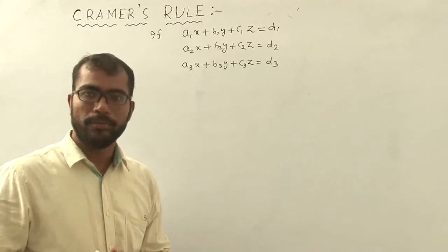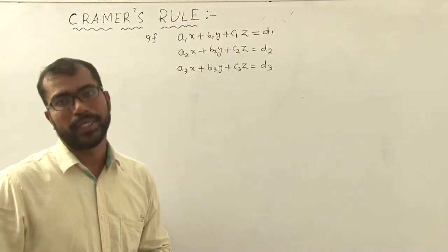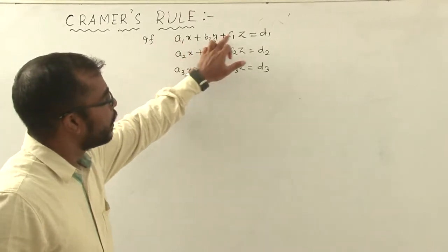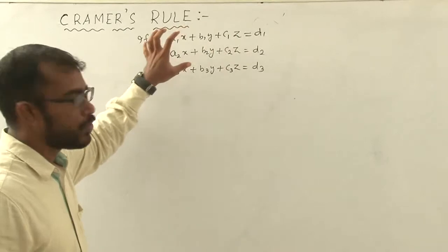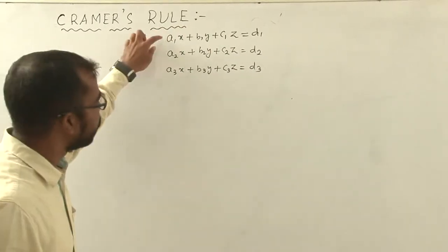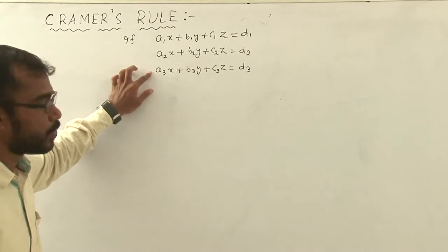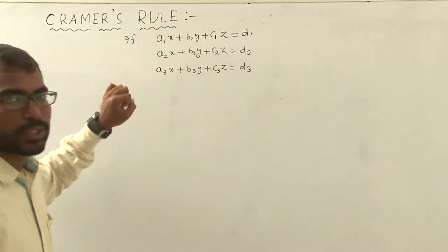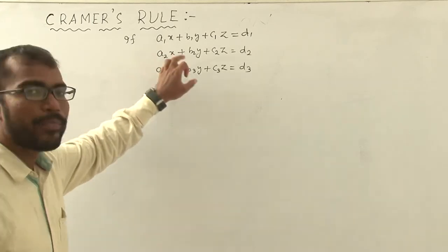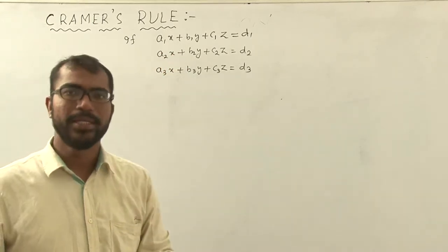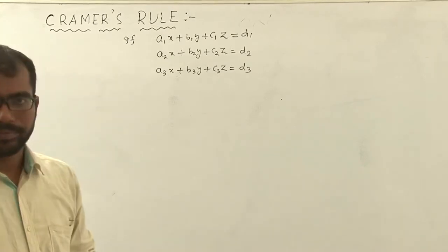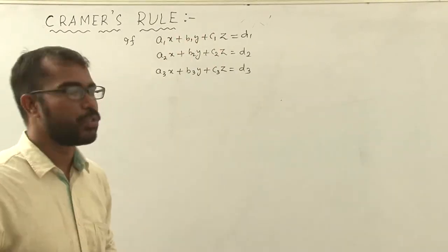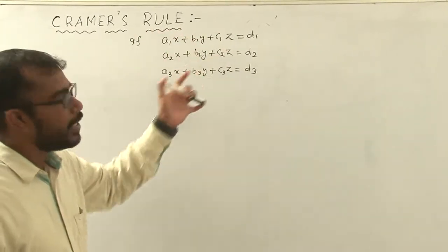If we take three number of variables then we must take three number of equations. If we take two number of variables then we take two number of equations. Here you can see there are three variables x, y, z, so it contains three variables, that means we have to write three number of equations. Linear means having degree 1, because the degree of x, y and z is 1, so it is called a linear equation.